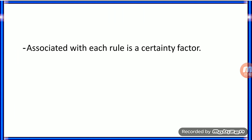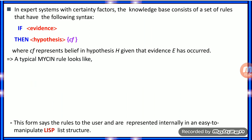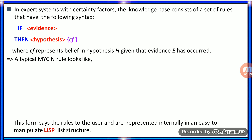Associated with each rule is a certainty factor. The certainty factor is a measure of the belief or disbelief in a conclusion given a set of evidence. In an expert system with CF, the knowledge base consists of a set of rules with the syntax: if evidence then hypothesis, supported by the CF value, where CF represents the belief in hypothesis H given that evidence E has occurred.